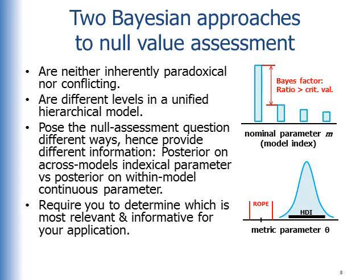If you believe that the null value is a truly viable description of your data and you really want to compare that against some alternative distribution on the parameter, then the Bayes factor approach is the way to go. But if you believe that the parameter is only going to be zero by infinitesimal chance and you're really trying to find out how big that parameter is, even if it happens to be small, then the estimation approach is the way you want to go.